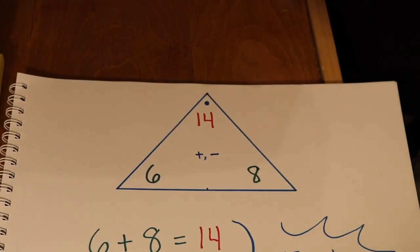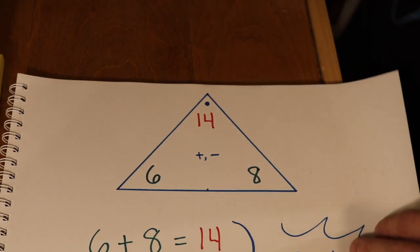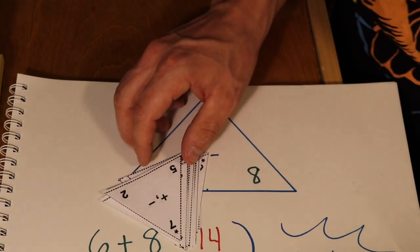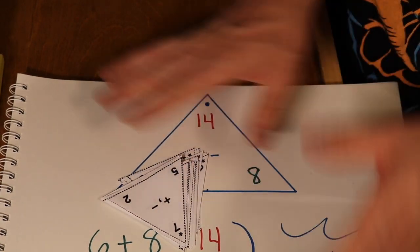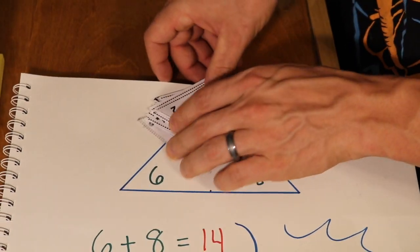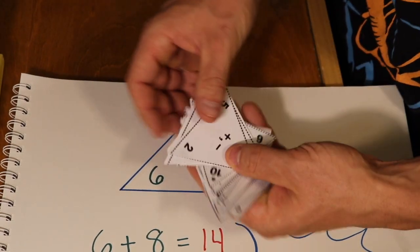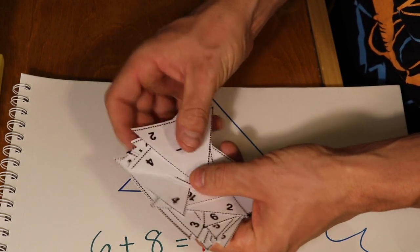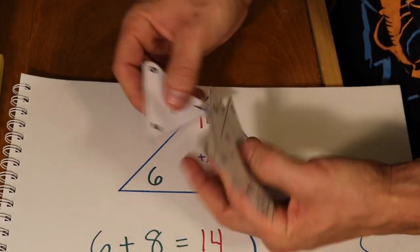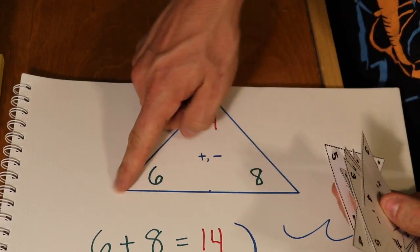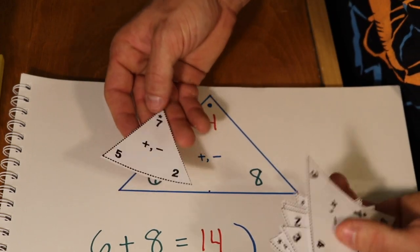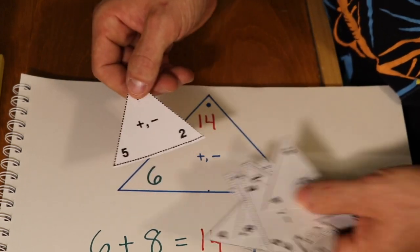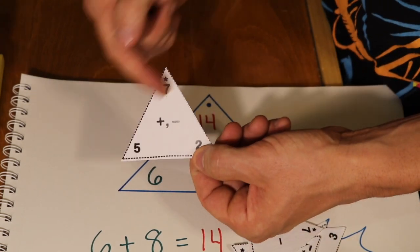For example, here's a whole bunch right here. You can find these anywhere all over the internet, or you can make them yourself, which I encourage you to do. For the sake of this video, I just printed these out to show you. Very easy to make. You can make just the triangle template and have the student fill in the numbers.